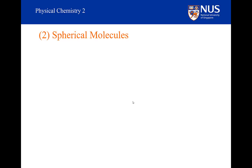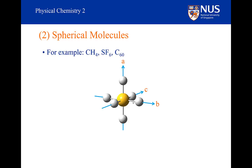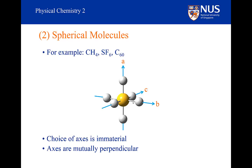How about spherical molecules? Examples include methane, which is tetrahedral; sulfur hexafluoride, which is octahedral; and the C60 molecule, a fullerene, which has icosahedral symmetry. These molecules have no permanent dipole moment and will not show a rotational spectrum. The A axis is aligned along the principal axis, and the B and C axes are also equivalent because all moments of inertia are identical. The choice of axes is immaterial; they are mutually perpendicular and the moments of inertia are all equal.